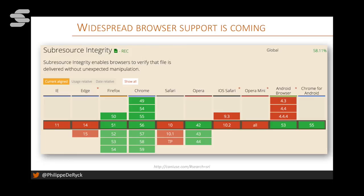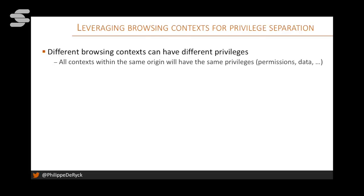Using different contexts for privilege separation becomes really useful when talking about scripts. Dropbox did a security overhaul and has interesting blog posts about their approach. They have a chat widget from a third party called SnapEngage, which they don't fully trust. Instead of plopping it into the main dropbox.com origin where file access exists, they isolated it in a separate iframe context and used Web Messaging to accomplish communication. That's the practical benefit of these building blocks: we have the tools to achieve privilege separation on the web, but few people use them.